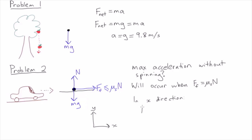In the x direction, the only force acting is friction, and so Fnet in the x direction is equal to μs·N.